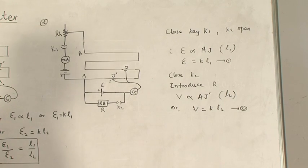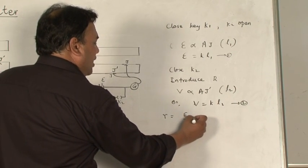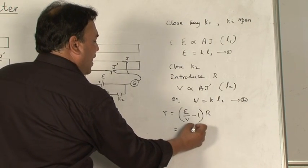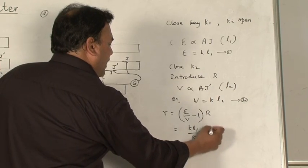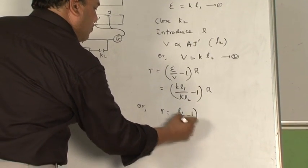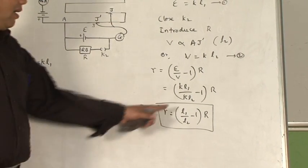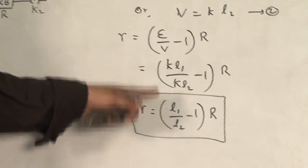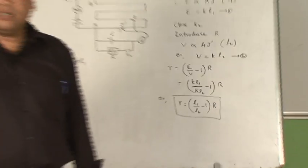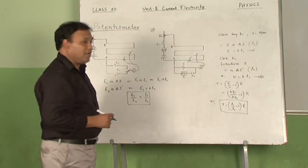Recalling the equation for internal resistance derived previously: r equals (E/V minus 1) multiplied by R. Substituting, this becomes r equals (KL1/KL2 minus 1) times R, or r equals (L1/L2 minus 1) multiplied by R. From this experiment L1 and L2 are determined, substituted into this equation to get the internal resistance r. From an examination point of view, there is a guaranteed question in your board examination on this topic of the potentiometer.